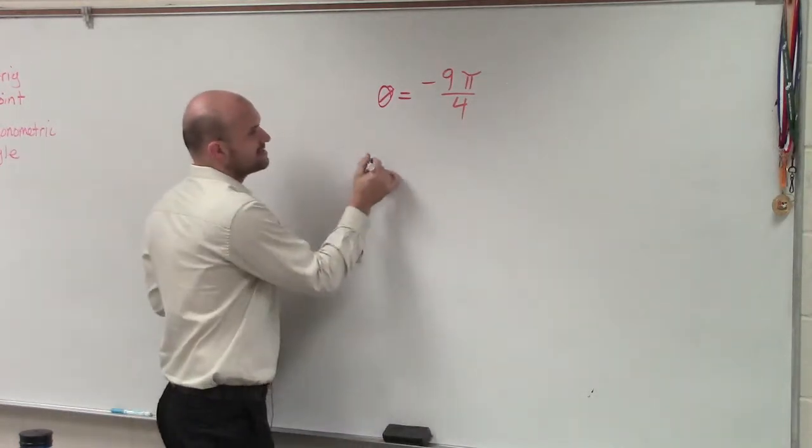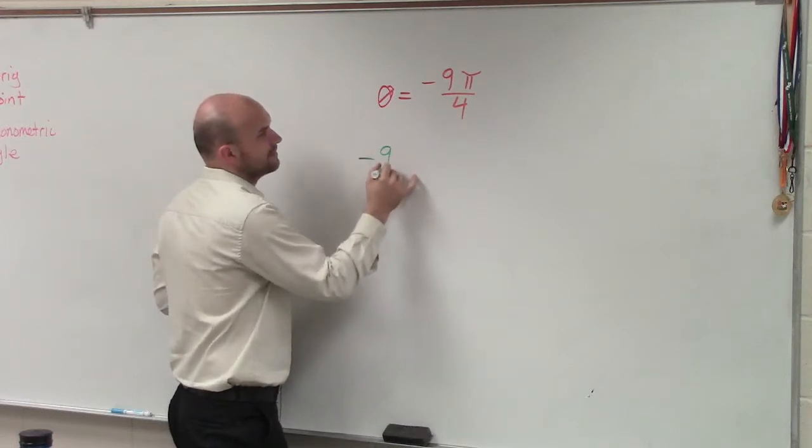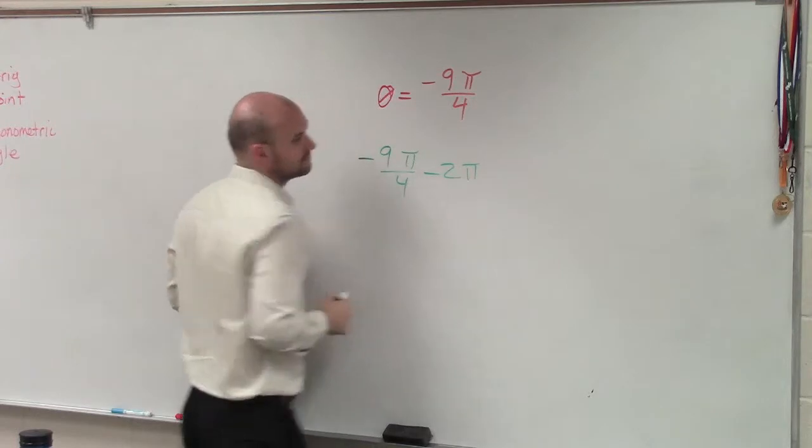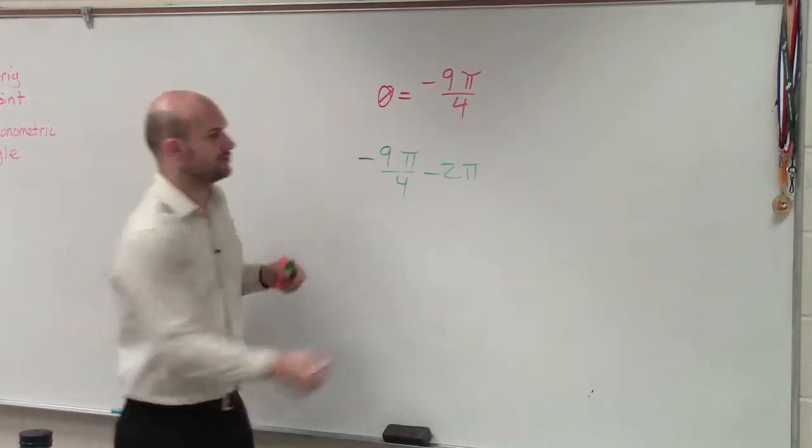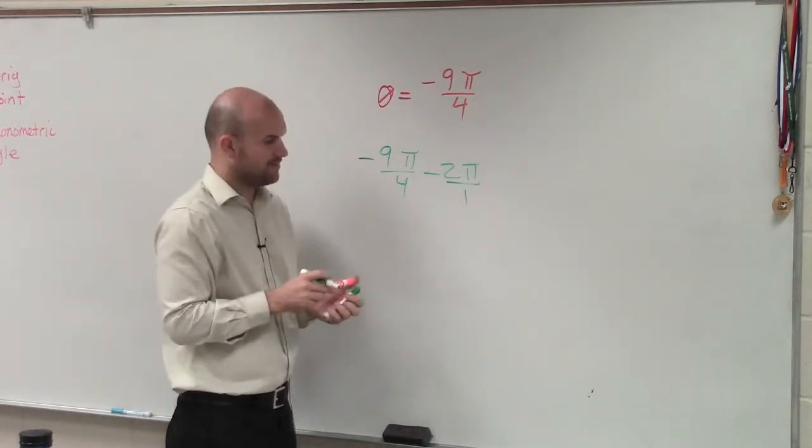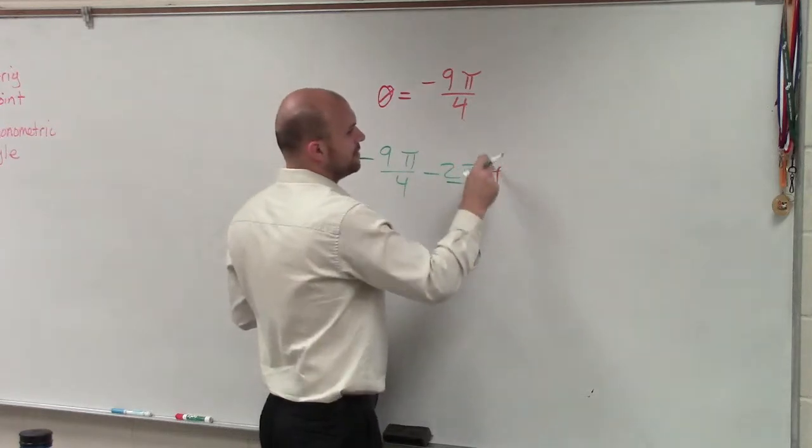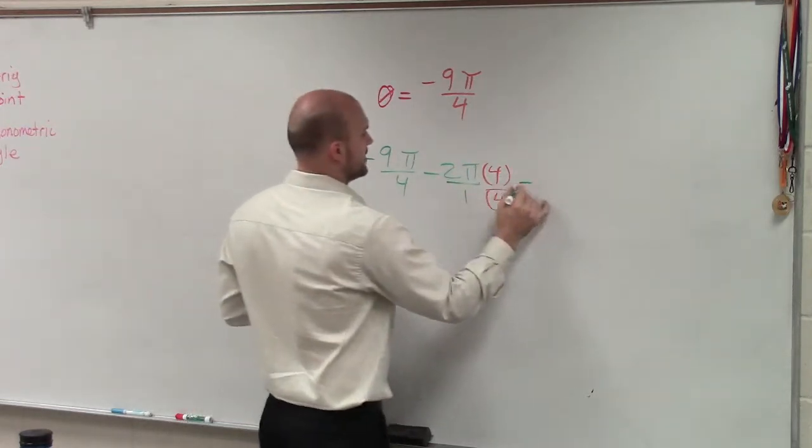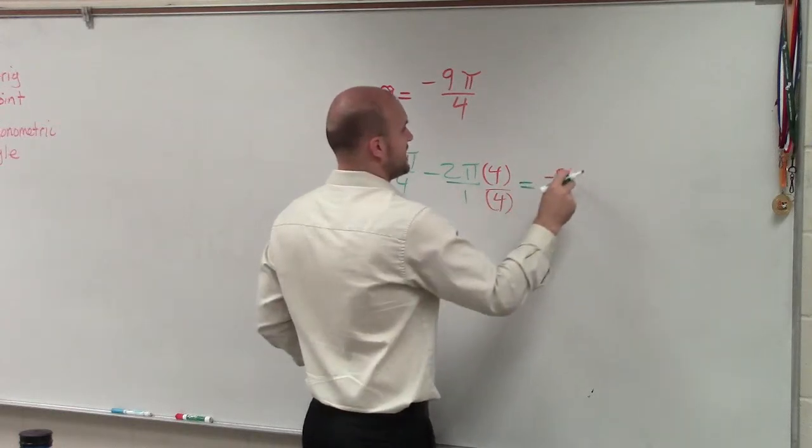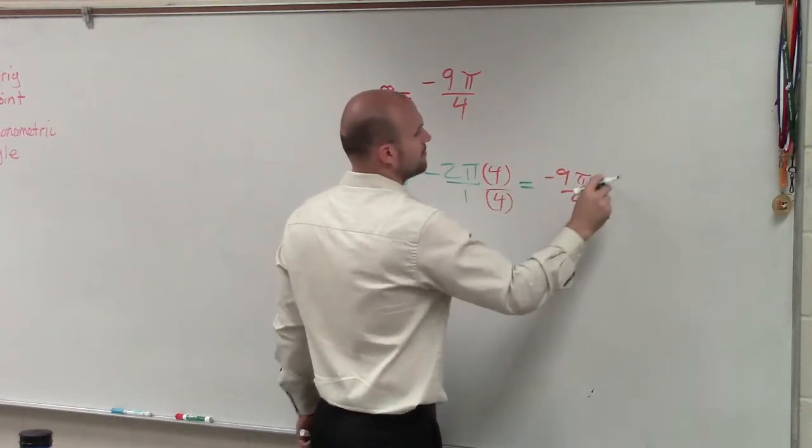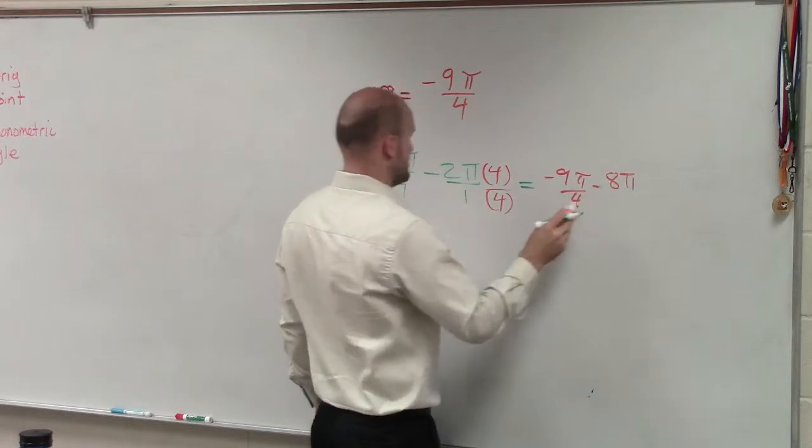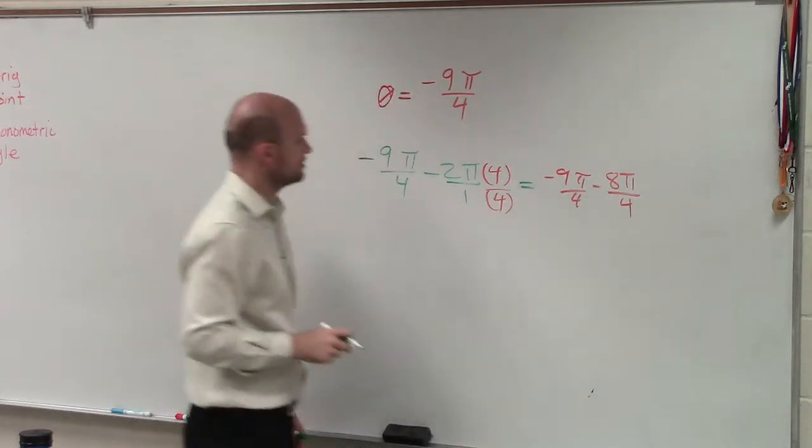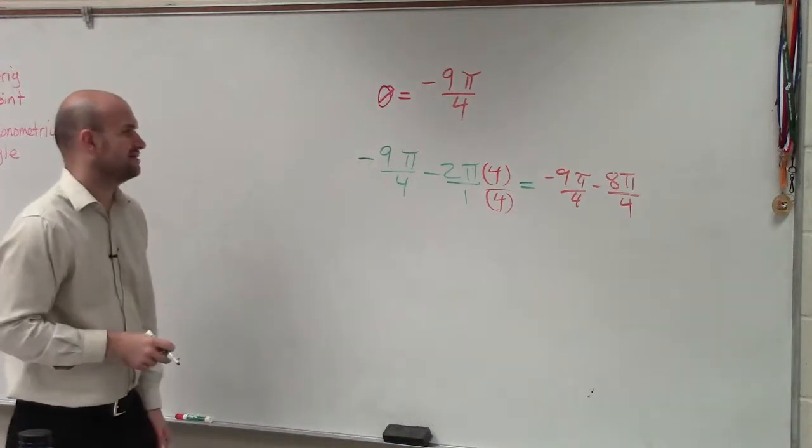So let's take a look at that. Let's subtract 2π. Negative π over 4 minus 2π, right? So we convert this over, multiply by my denominator, so I have 4 over 4. Therefore, that equals negative 9π over 4 minus 8π over 4. Why am I subtracting? I don't want to subtract.